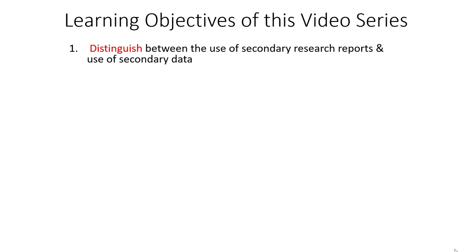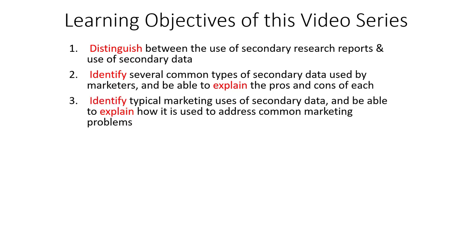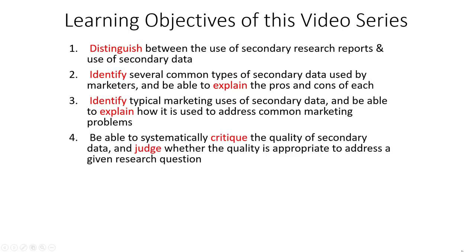Let's talk about the learning objectives for this video series. We'll make a conceptual distinction between what a secondary research report is versus using secondary data for your own analysis. Next, we'll identify several common types of secondary data used by marketers, pointing out common internal and external sources. Then we'll identify typical marketing uses of secondary data and explain how it addresses common marketing problems. Finally, we'll go in depth on how to systematically critique the quality of secondary data.